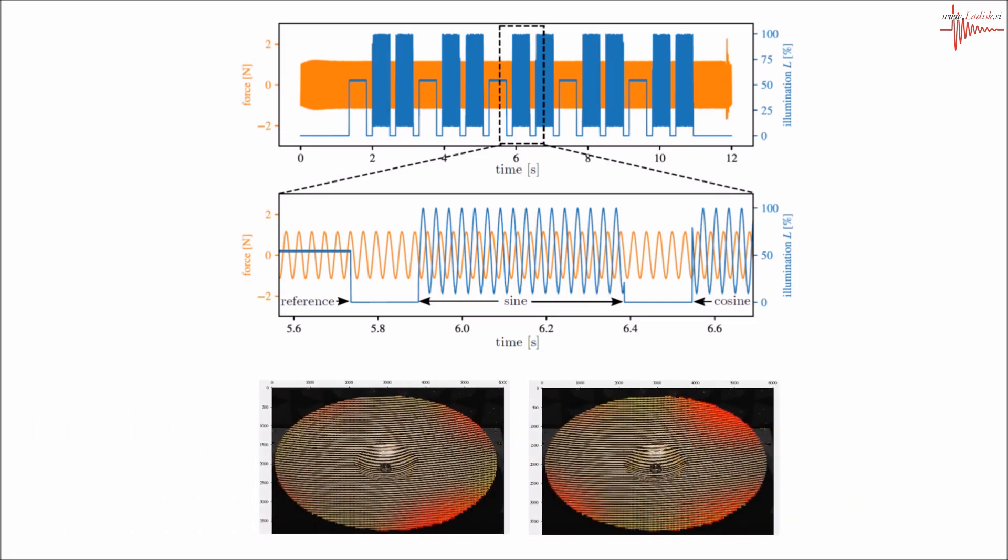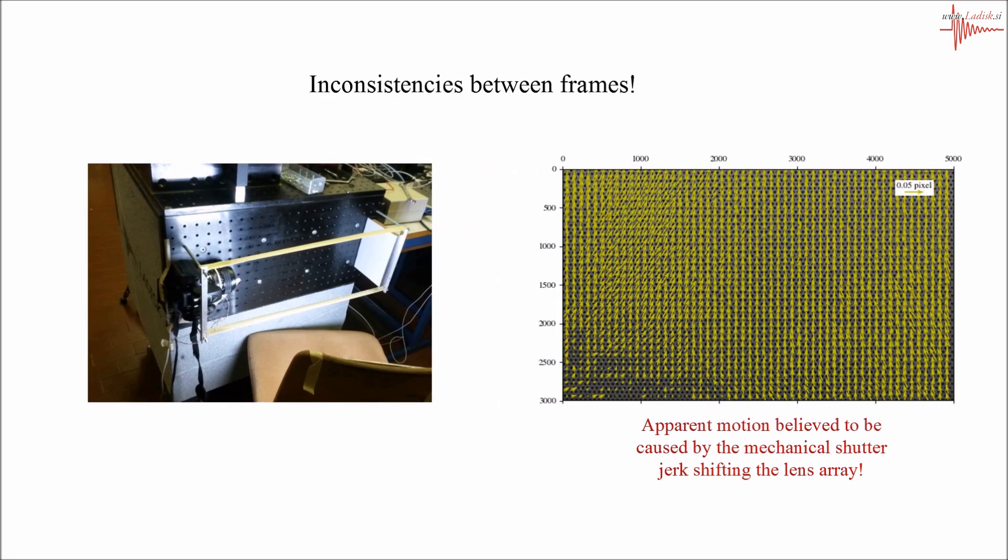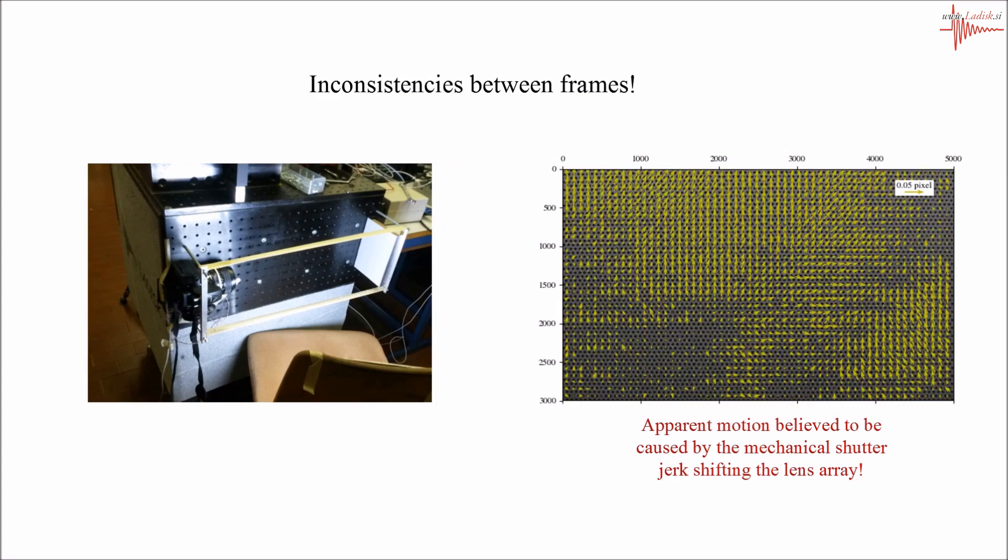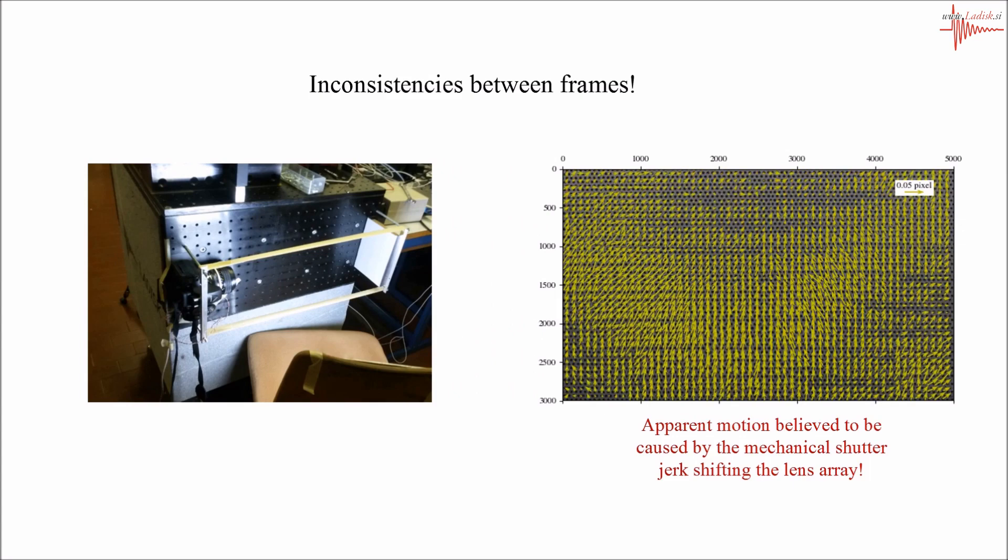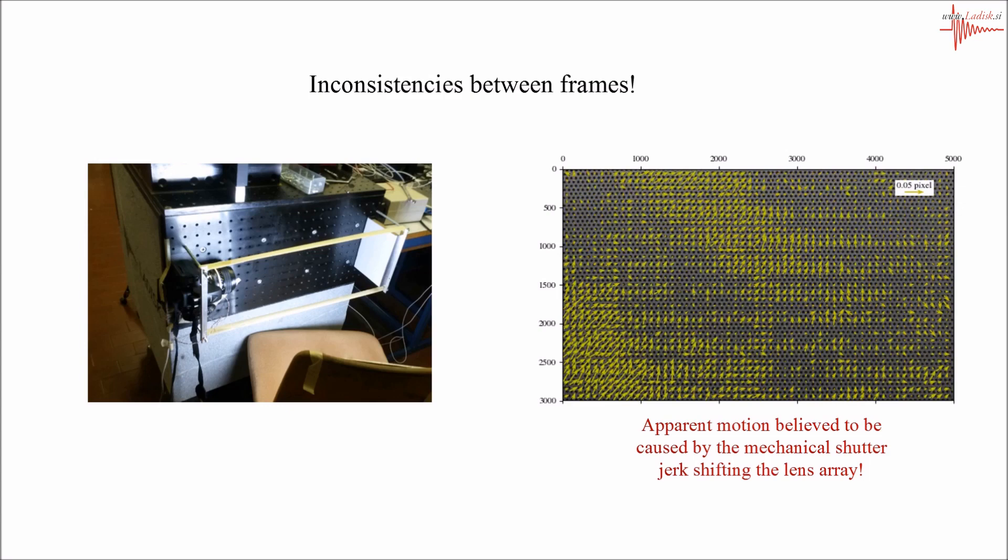After considerable effort, the errors were traced to inconsistencies between frames. A bunch of experiments for stationary conditions were performed on a vibro-isolated block, where apparent motion was discovered between frames. These are some examples of the apparent motion. We believe these apparent displacements are caused by the mechanical shutter operation and the retraction of the mirror in the DSLR camera, which produces a significant jerk, causing shifts in the lens array.